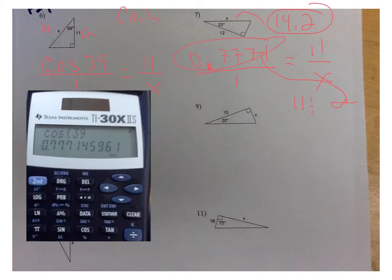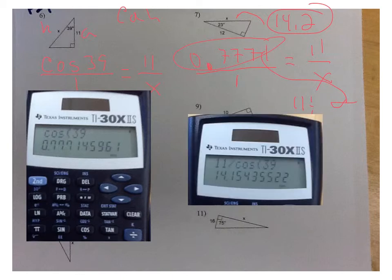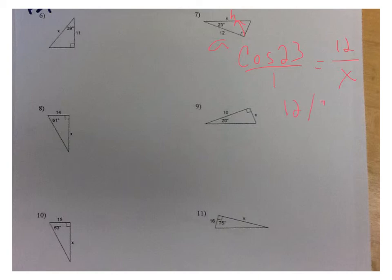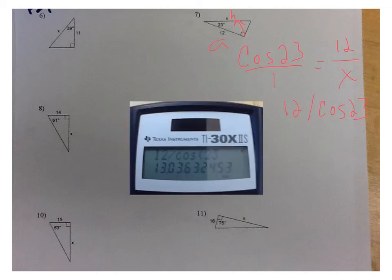A shortcut you can do with your calculator: type in 11 divided by the cosine of 39 directly, without doing the decimal replacement, and it gives the same answer. Stop the video and try number 7 — it's a similar question, still using cosine. For that problem, the adjacent side is 12, the hypotenuse is X, so cosine of 23 over 1 equals 12 over X. Cross-multiply and divide: 12 divided by the cosine of 23 gives about 13.0.